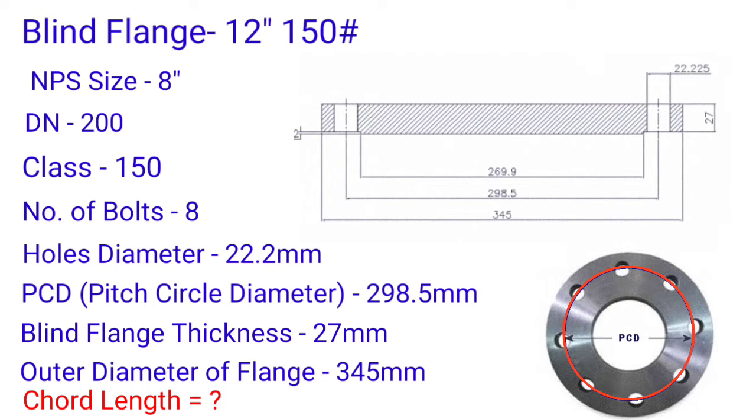Number of bolts or holes: 8, hole diameter: 22.2 mm, PCD pitch circle diameter: 298.5 mm, blind flange thickness: 27 mm, OD outside diameter of flange: 304.5 mm. These all are standard blind flange values.